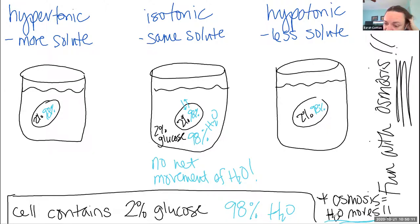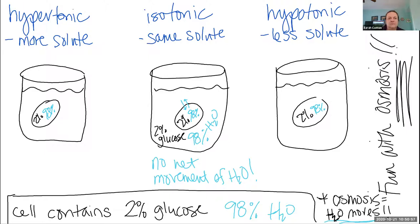Let's remind ourselves what the definition of osmosis is. Osmosis essentially is the diffusion of water — it's the movement of water. Which direction is the water going to move in osmosis? That's kind of tricky, so let's put a pin in that for a second and come back to it when we do a little example. Which one do you want to do next — hypertonic or hypotonic? Hypertonic.